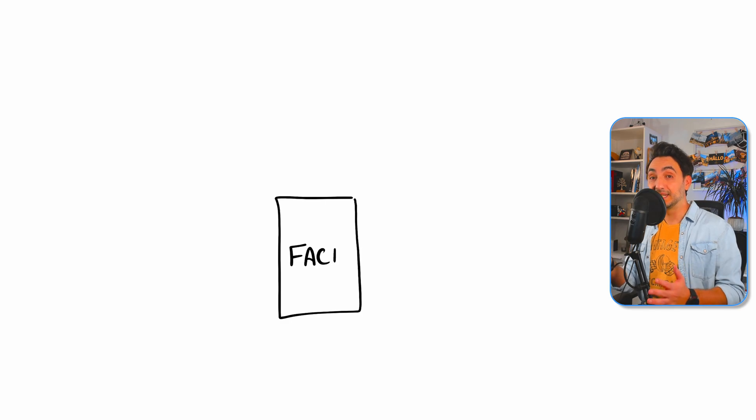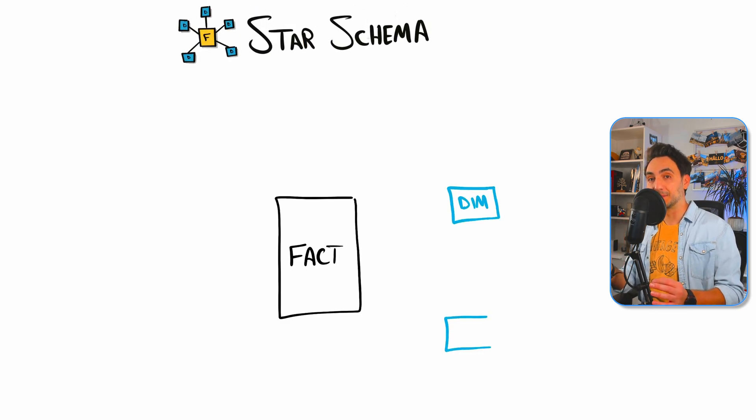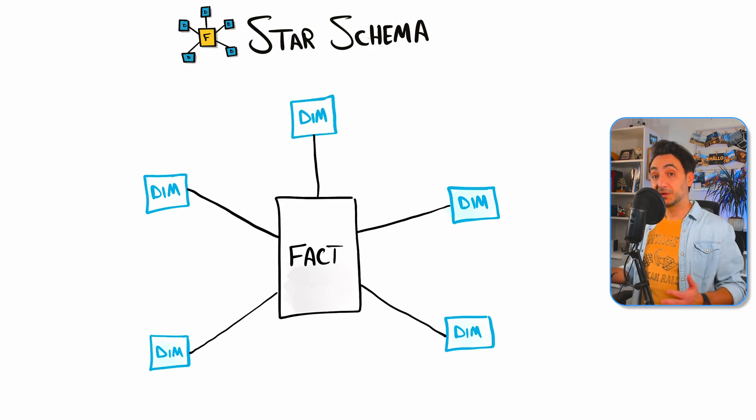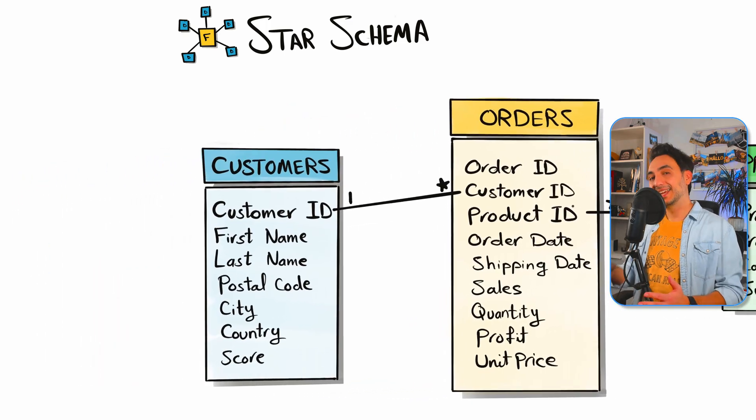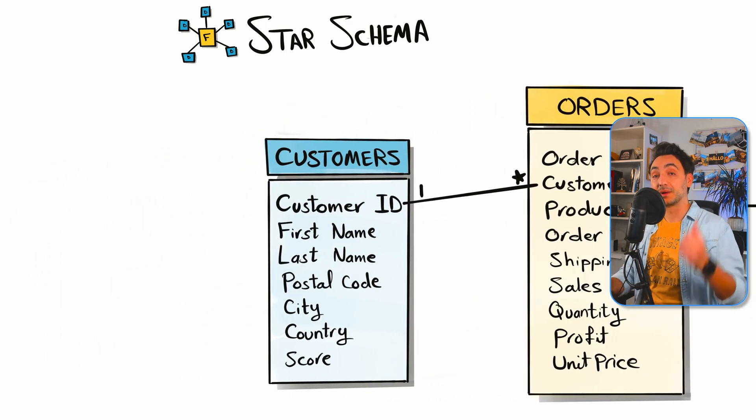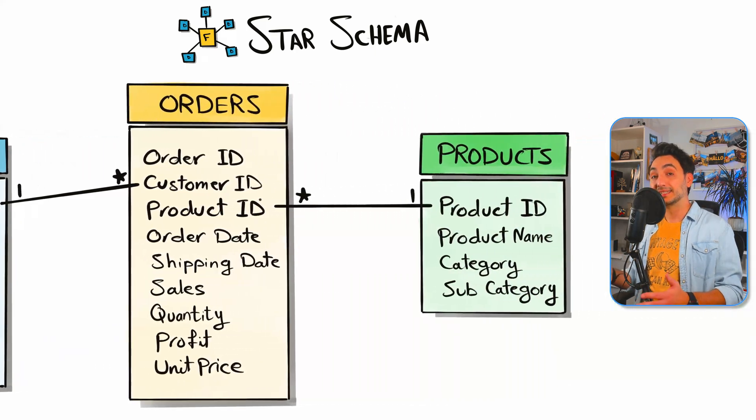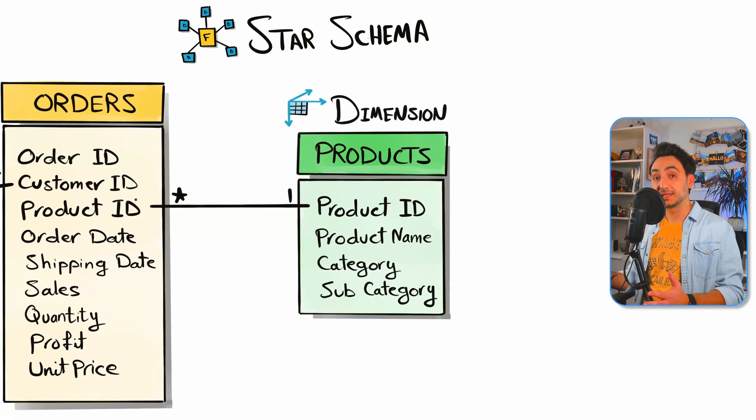Our data model has a name and we call it star schema. If you're gonna work on real projects, you're gonna hear about the star schema a lot. Star schema has mainly two types of tables: facts and dimensions. For example, we have the table customers - it describes each customer by their first name, last name, country, and so on. So customers is a dimension table. We have another dimension table in our data model, which is the products. Products table describes as well each product by their name and category, so it is as well a dimension.